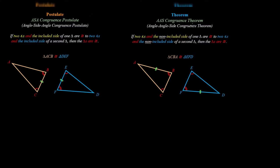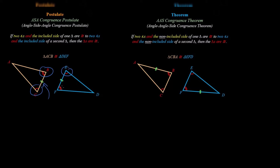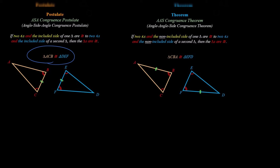So those are the four ways, and the last one is a theorem. Let's discuss them and then do examples. The angle-side-angle congruence postulate states the following: if two angles and the included side — the side between those angles — of one triangle are congruent to two angles and the included side of a second triangle, then the triangles are congruent. That's angle-side-angle: two angles and the included side.